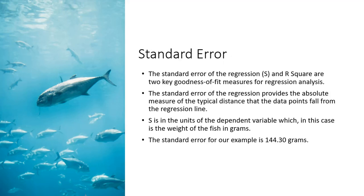Another good way to test for goodness of fit is the standard error. That along with R square are the two methods to do that. The standard error of a regression provides the absolute measure of the typical distance that the data points fall from the regression line. Now this standard error is in the unit of the dependent variable, which in this case is the weight of fish and grams. The statistic for our example is 140.30 grams, which seems reasonable when you look at the data and you see fish that weigh from 200 to 1200 grams.